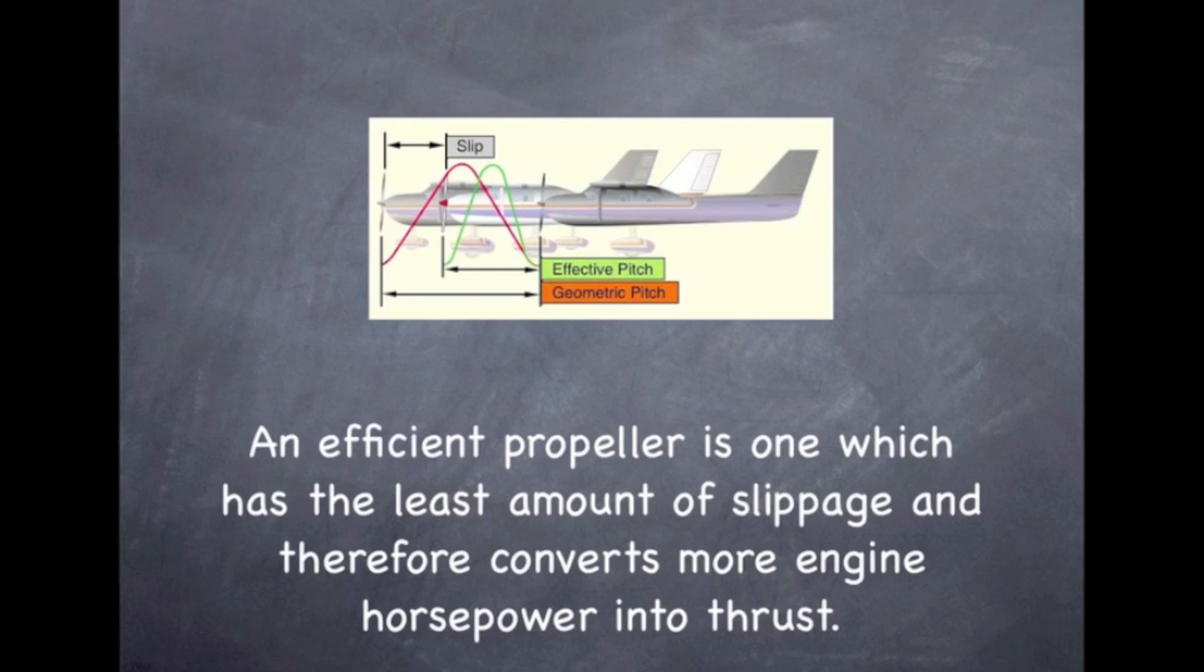The reason a propeller is most efficient at a specific speed through the air is due to propeller slip. Propeller slip is the difference between the theoretical pitch or geometric pitch and the actual or effective pitch of the propeller. An efficient propeller is one which has the least amount of slippage and therefore converts more engine power into thrust. A constant speed propeller keeps the propeller pitch adjusted for maximum efficiency for most conditions of flight.